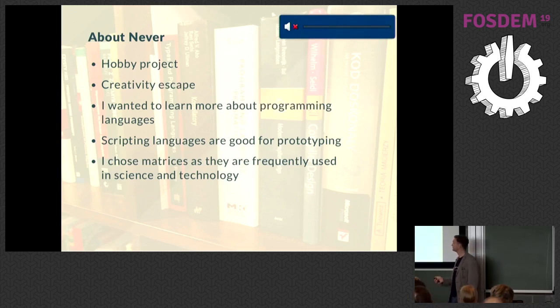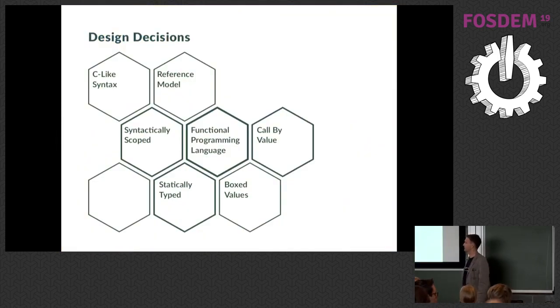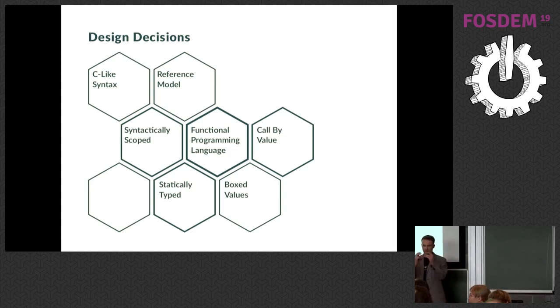The design decisions: First, I began the language as a functional programming language. I decided it should be call-by-value, it should be statically typed because I want the compiler to correct my code, and besides, such code is faster. I knew that many functional programming languages are ML-based. Maybe you know OCaml, which is very hard to read, so I thought when everything is done from scratch, maybe I can have some C-like syntax. We have a reference model, so everything is a reference. Basically we have boxed values—every float or integer or string is kept in memory as a separate object. And it's syntactically scoped.